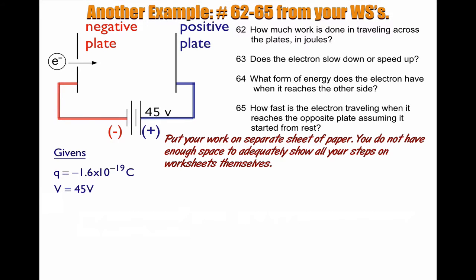Number 64. What form of energy does the electron have when it reaches the other side? Well, it's moving. That's all. It's just moving. So when it reaches the other side, it's going to have kinetic energy because it's moving.